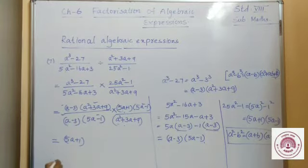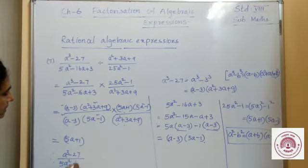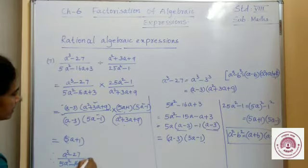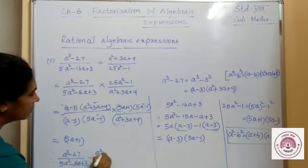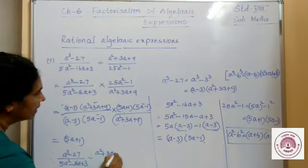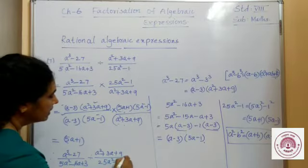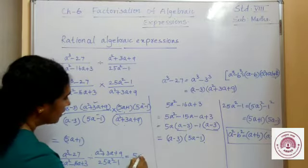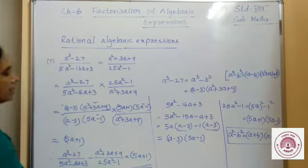Therefore, (a³ - 27) upon (5a² - 16a + 3) divided by (a² + 3a + 9) upon (25a² - 1) is equal to 5a + 1. So, the answer is 5a + 1.